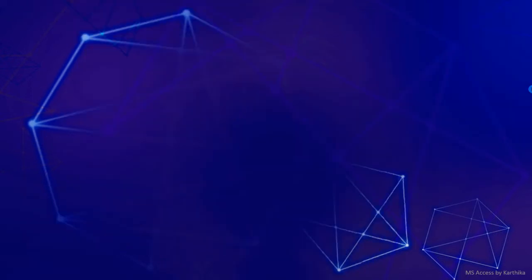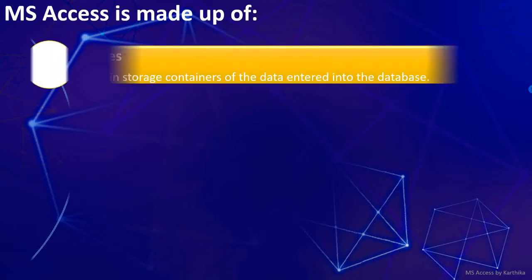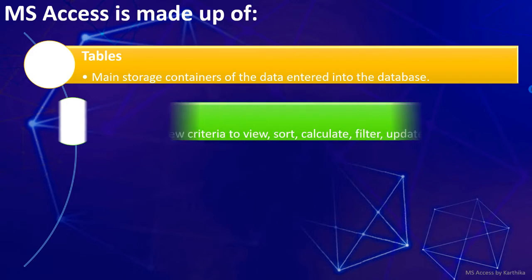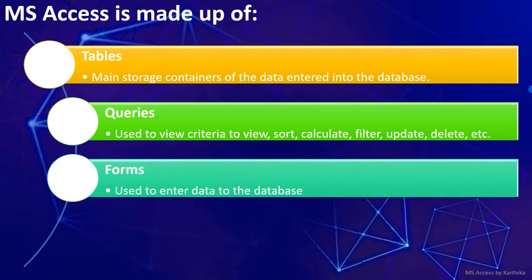MS Access has some important features. First, tables — a table is the main storage container of data entered into the database, made up of rows and columns. Next, queries are used to view, sort, calculate, filter, update, delete, and perform whatever you want to do on your table. Everything can be done through queries — they are used to give criteria for all operations on tables.